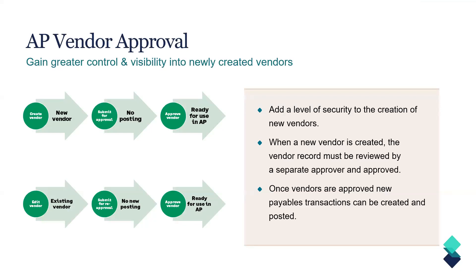First up on the list: AP vendor approval. This is a very exciting update that's been requested for a long time. It adds a control feature that many people have needed for audit purposes or just for efficient workflow. It adds a security level where when someone creates a vendor, another person has to review it — very similar to AP bill approval or AP payment approval workflow. So when you create a new vendor, instead of just hitting Save, it would say Submit and go to the assigned approver for that vendor.